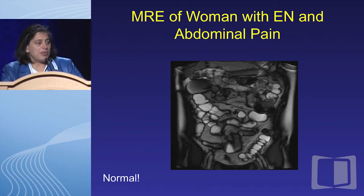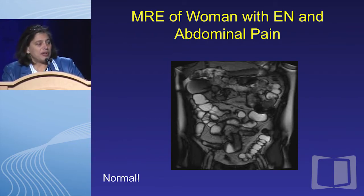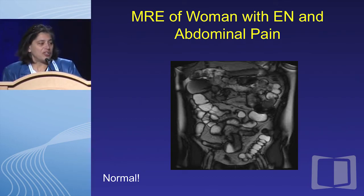Here is the MRE of a woman with erythema nodosum and abdominal pain. There's no telltale arrow here for where the lesion is — because it's completely normal. This was actually her third MRE done at a third institution because she absolutely had erythema nodosum that got better with prednisone, but she continued to have abdominal pain. They were convinced she had Crohn's disease and they just kept missing it. After three negative MREs, I put her on a tincture of amitriptyline and she did much better.